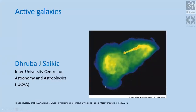What you see on the first slide is a radio image of an optical galaxy in the Virgo cluster, M87. It's a dominant elliptical galaxy over there. Radio images give you information which you cannot really get at other wave bands — they open up a completely new view of our universe.